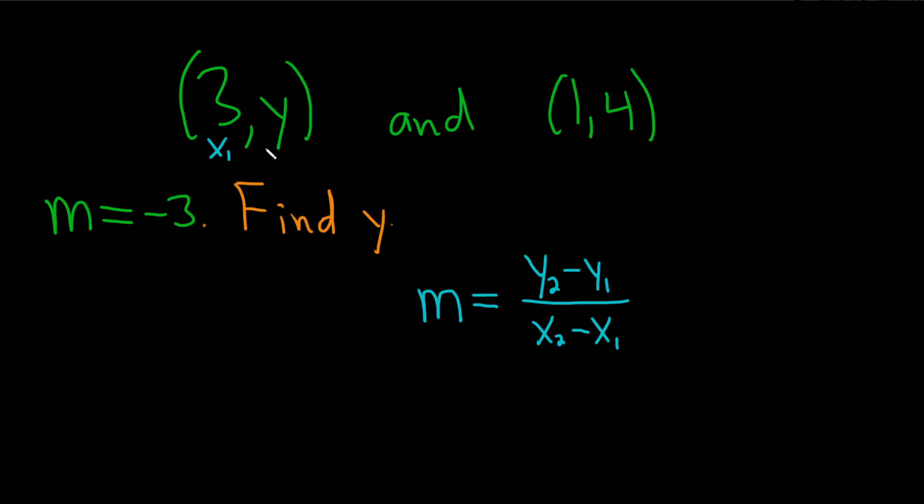This will be our x1, this will be our y1, this will be our x2, and this will be our y2. And now let's very carefully just plug everything in. So we actually know the slope, so that's m, so that's negative 3.